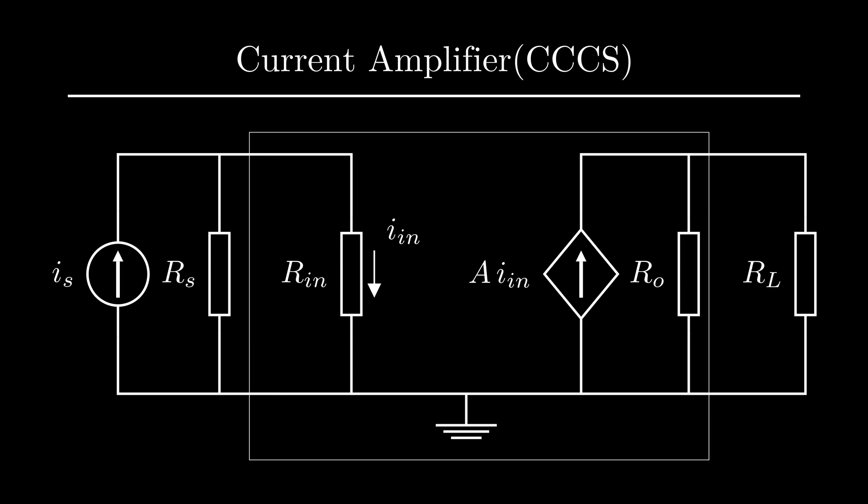But note, the input impedance for a current sensing amp must be zero so that all current passes through the input branch and the output impedance for a current driving amp must be infinite so that all the amplified current passes through the load branch.